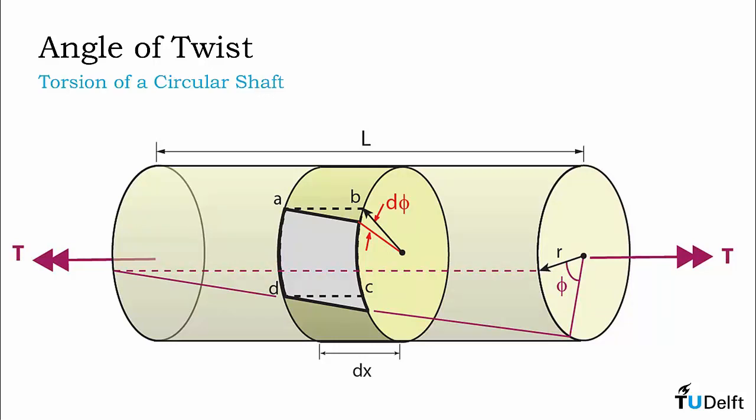Associated with this pure shear deformation is a small angle of twist. The cross-sectional plane containing side CB rotates through an angle of twist relative to the cross-sectional plane containing side AD. This angle of twist is denoted d-phi in the figure shown here. If you subdivide the shaft along its length into many of these elements, each element will have its own angle of twist. The angle of twist of the overall shaft would thus be a summation of each of these individual angles of twist.